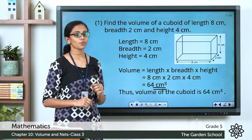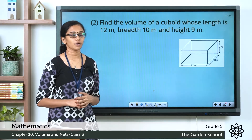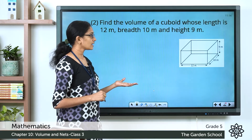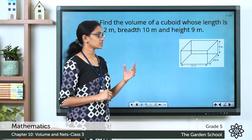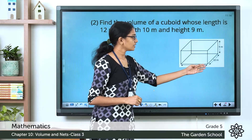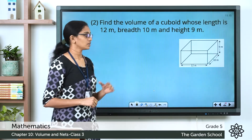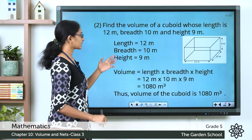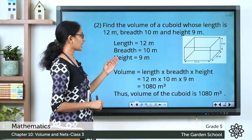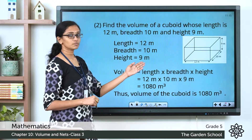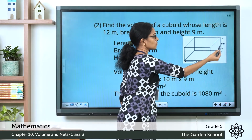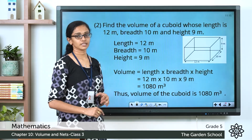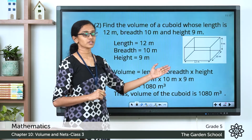I hope this is clear. Now one more example: Find the volume of a cuboid whose length is 12 meters, breadth is 10 meters, and height is 9 meters. Note that the dimensions are in meters, so it's a rather large cuboid. Volume equals length into breadth into height, that is 12 into 10 into 9. Length equals 12 m, breadth equals 10 m, height equals 9 m. So volume equals 12 × 10 × 9, which equals 1080 meter cubed. The volume of the cuboid is 1080 cubic meters.